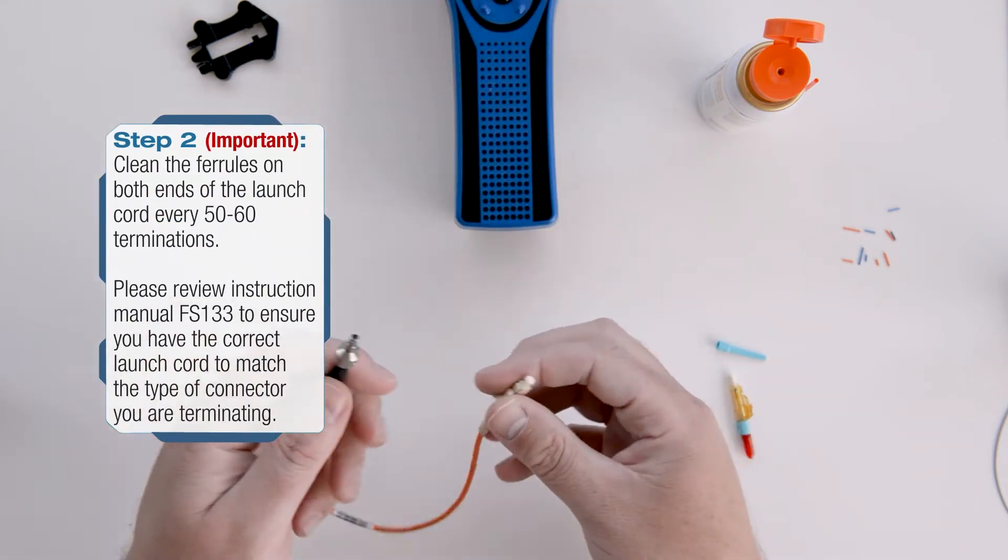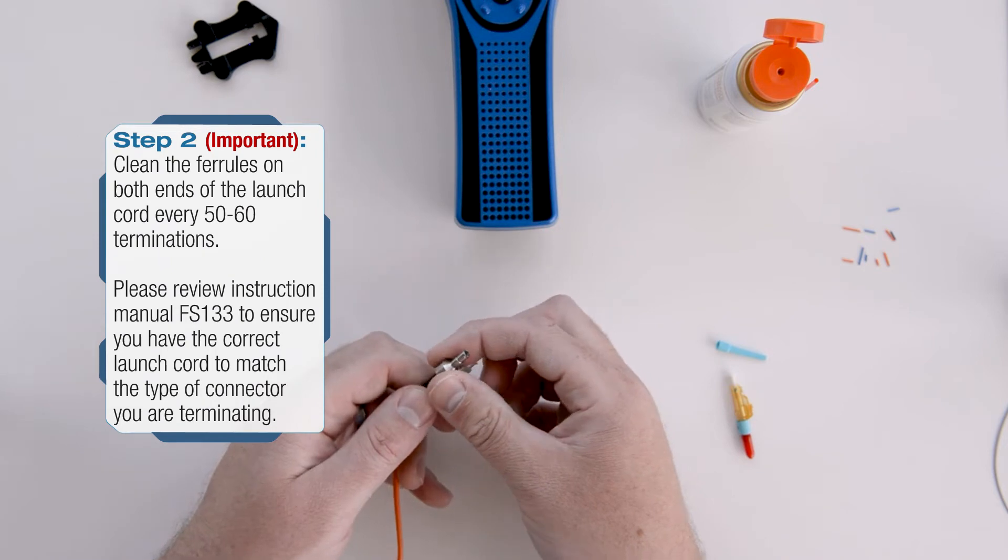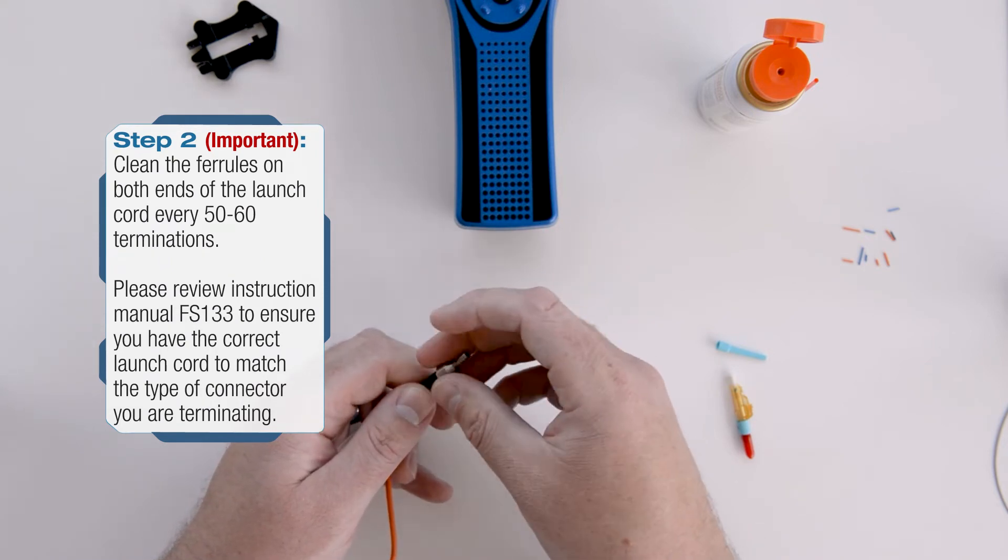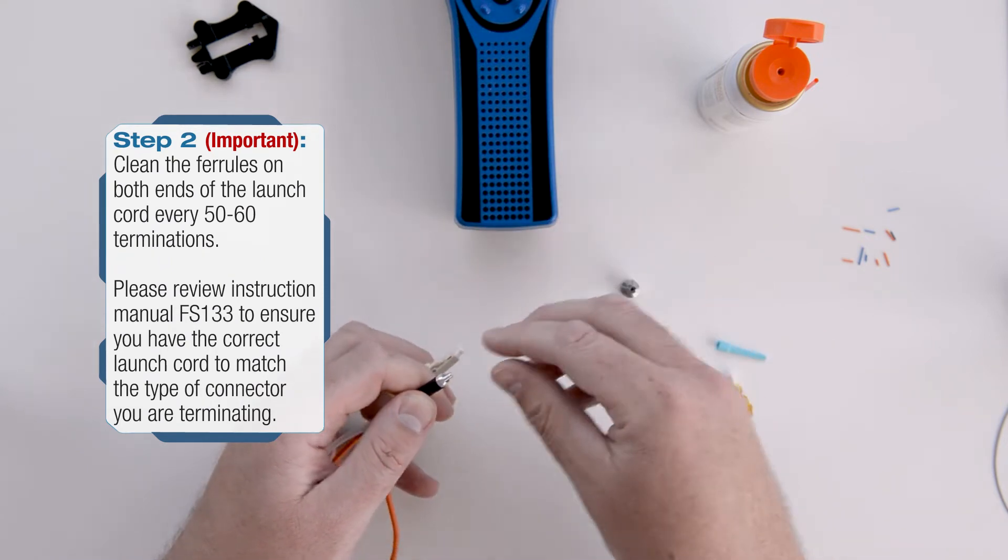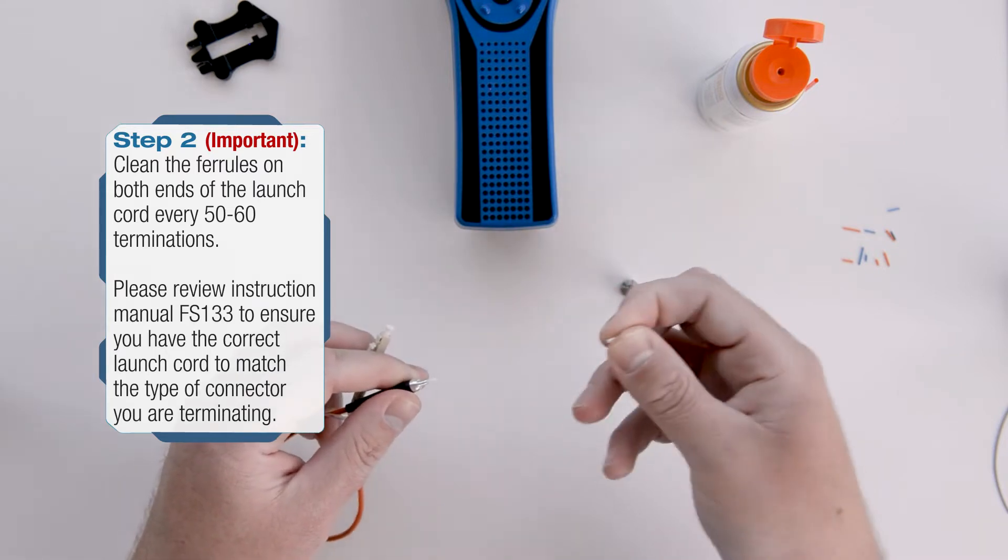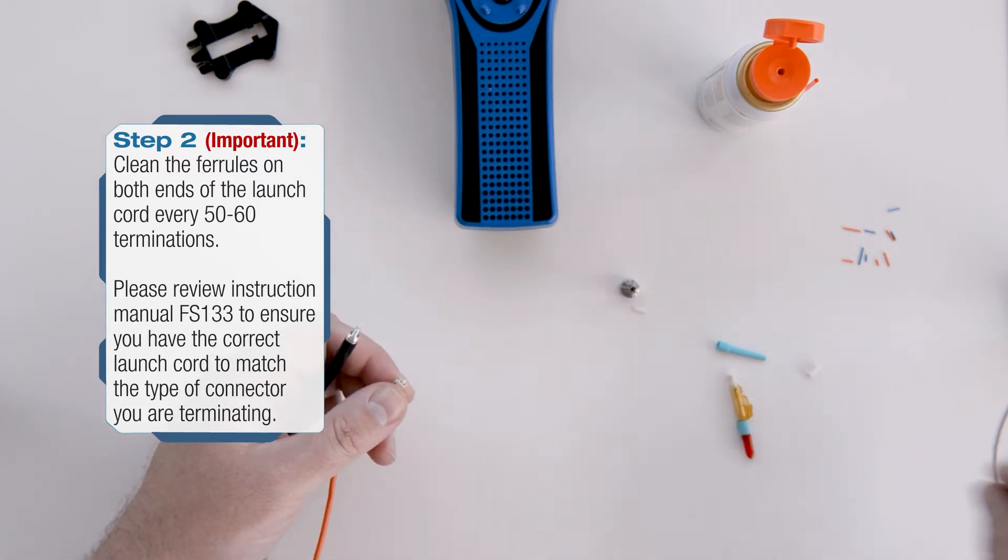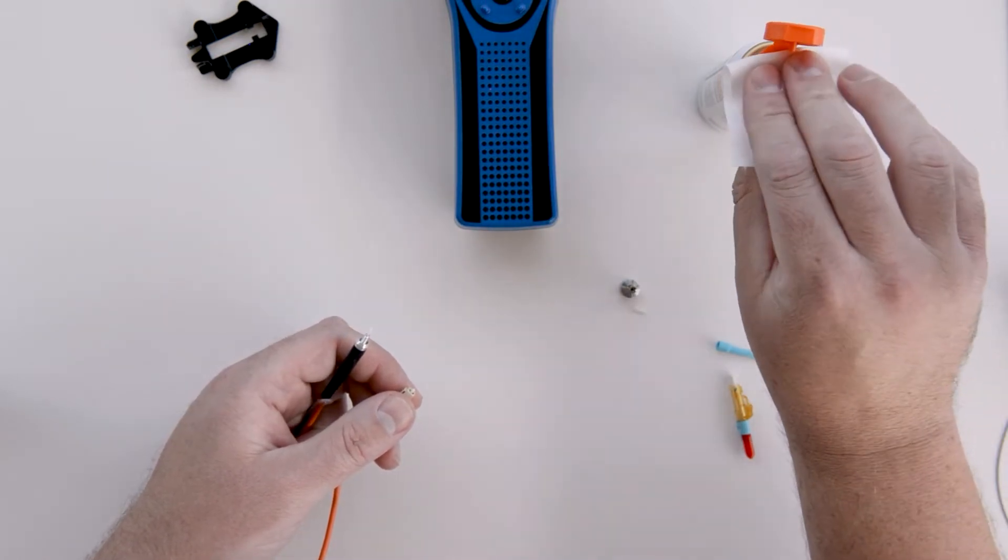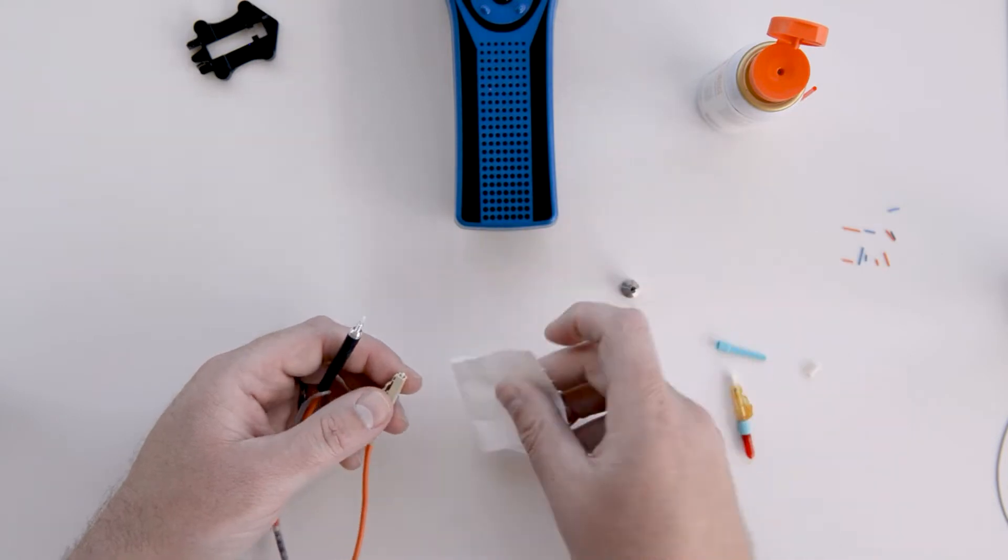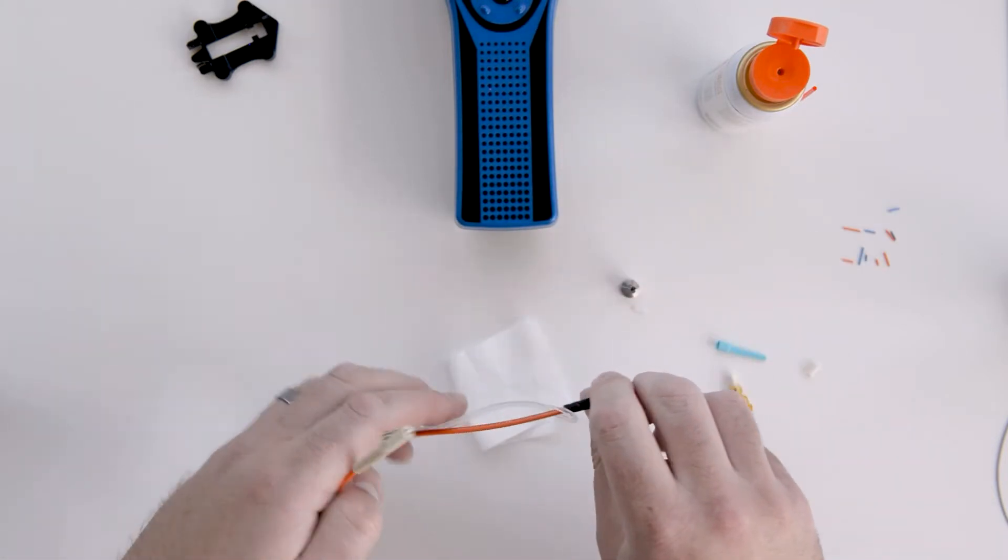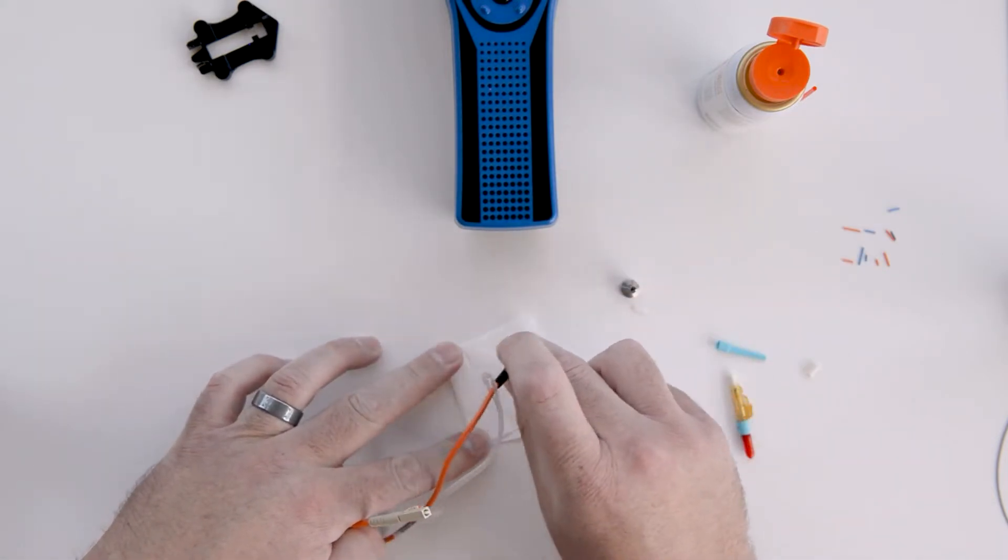It is vital to clean both ends of the launch cord every 50 to 60 terminations. To do this, first remove the adapter and then the alignment sleeve. Using an approved wipe and cleaning solution, clean the ferrule end face by running it from the wet portion of the wipe to the dry portion of the wipe.